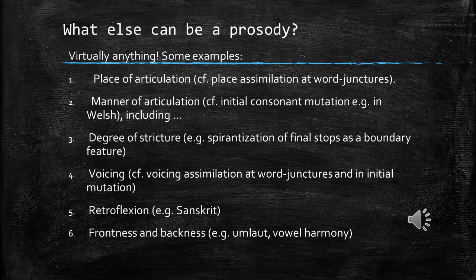Cells — prosody — can be virtually anything. Some examples include: place of articulation (place assimilation at word junctures); manner of articulation (lenition, consonant mutations in Welsh); degree of stricture (spirantization of final stops as a boundary feature); voicing (voicing assimilation at word junctures); and frontness and backness (vowel harmony).